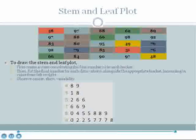For example, for the stem value of 4, there are two values in the bucket, 48 and 49, so we list an 8 and then a 9 alongside the stem.